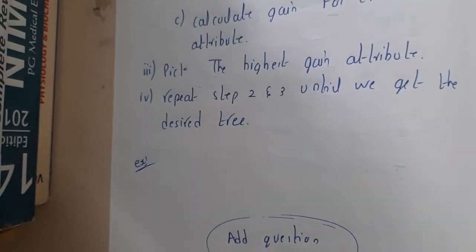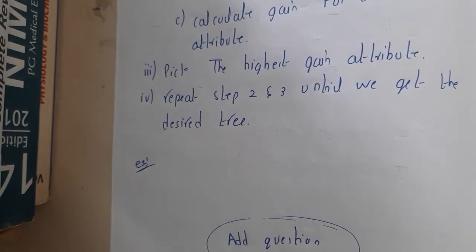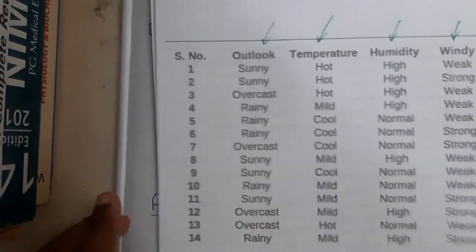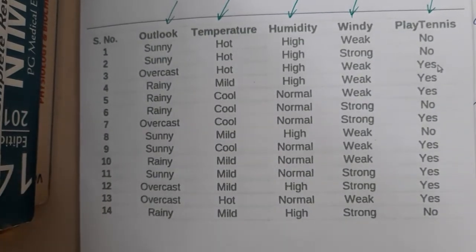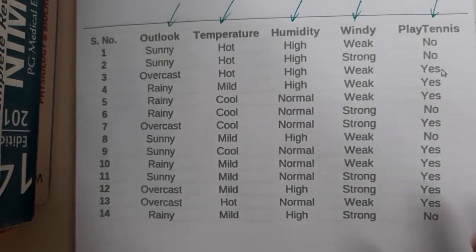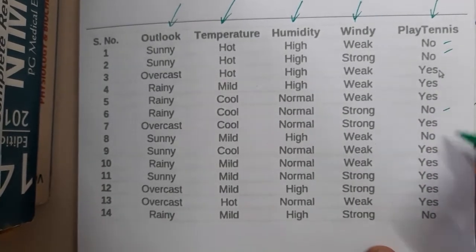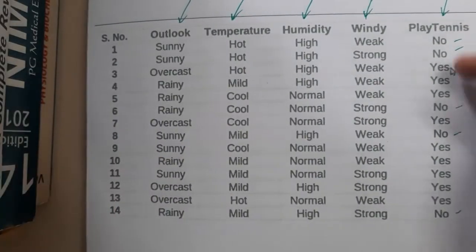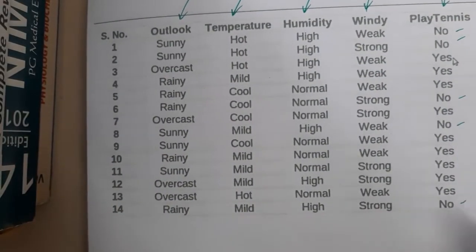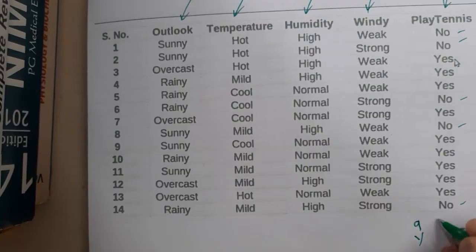Let us go through the problem. I'll give an overview rather than solving step by step, because that would take 30 to 45 minutes and the video would be too lengthy. This is our question — a dataset with 14 entries. 5 entries are 'no' and 9 entries are 'yes'. So we have totally 9 yes's and 5 no's.